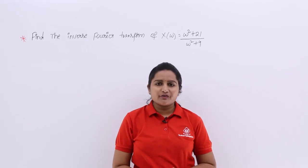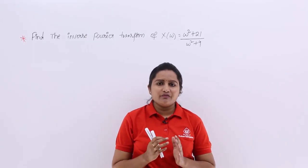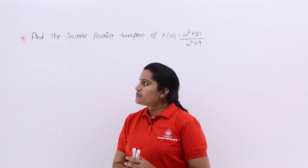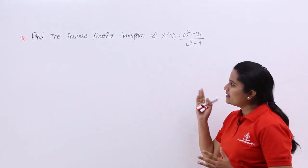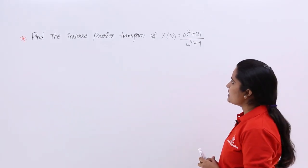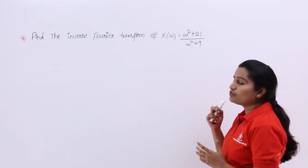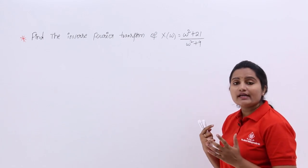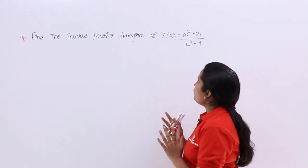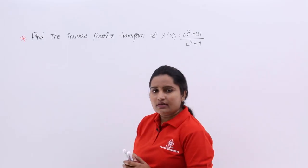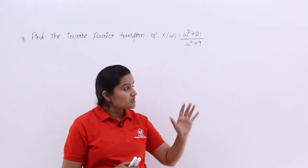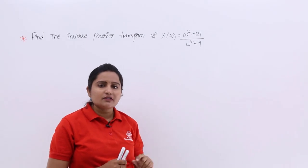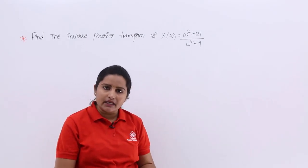In this video, we are going to discuss inverse Fourier transform of a signal. Observe the problem here: find the inverse Fourier transform of x of omega, which is equal to omega square plus 21 divided by omega square plus 9. When you observe this Fourier transform, this is the Fourier transform of a signal, and we need to find out the inverse Fourier transform, meaning the original signal.